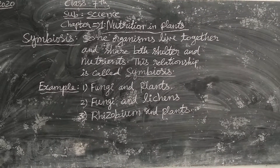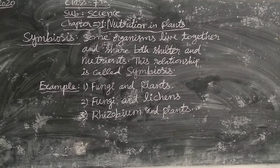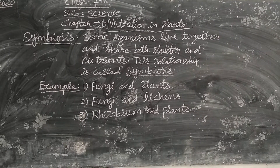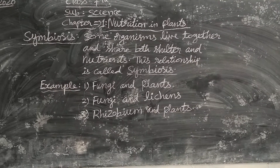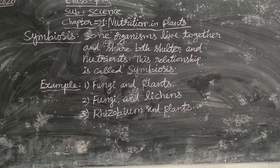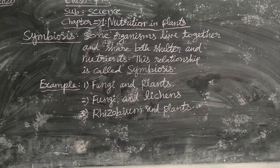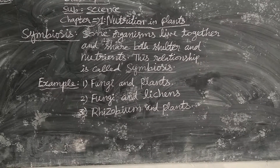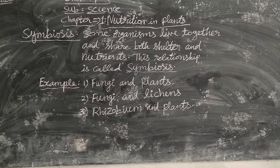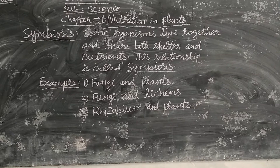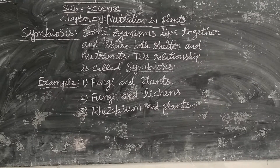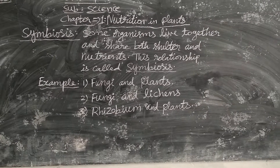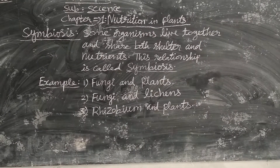First example: Fungi and Plants. Fungi lives in the roots of plants. It provides water to the plants, and in turn, plants provide nutrients to the fungi. In this way, they are helping each other.